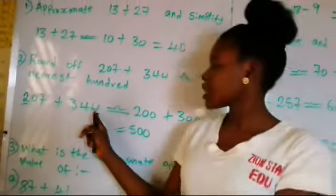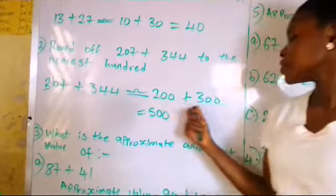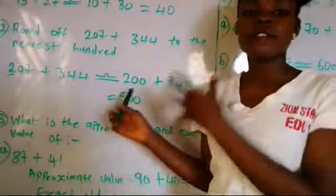Then we put our plus. Neither of these two 4 is up to 5. Round them down to 0, giving us 300. So we have 200 plus 300, which is equal to 500.